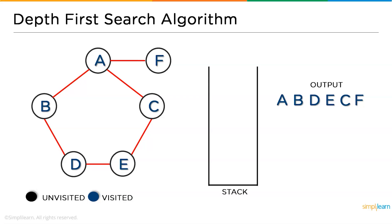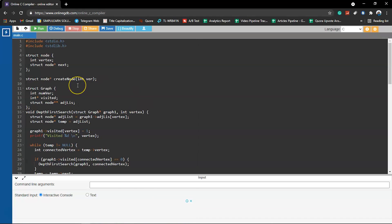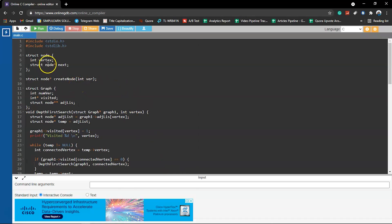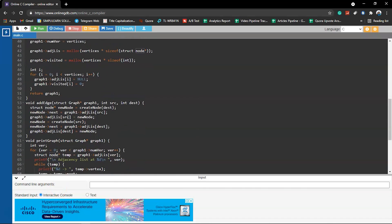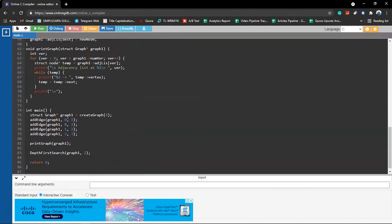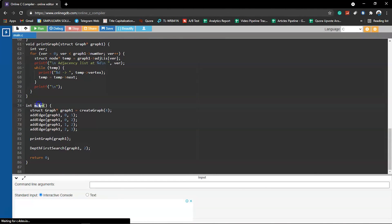Now for a little more understanding, let's go through a practical example where we will execute a program for implementing the DFS algorithm. This program on my screen is an example for DFS algorithm. Here we have the structure node, followed by the methods which will create the edge and print the graph elements. And finally we have the main class.